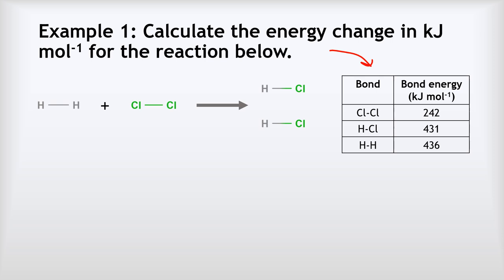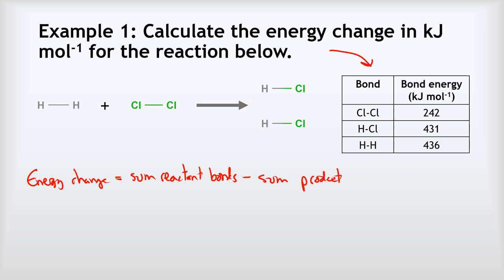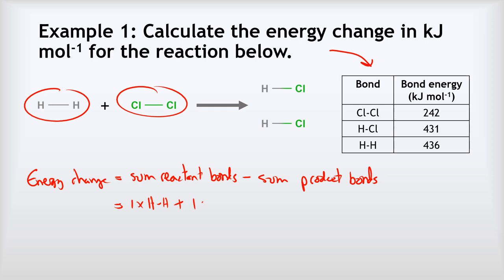To calculate our energy change, that is going to be the sum of our reactant bonds subtract the sum of the product bonds. In our reactants we've got one hydrogen-hydrogen bond — so one times H-H — and we've also got one chlorine-chlorine bond — one times Cl-Cl. That's the sum of my reactant bonds.